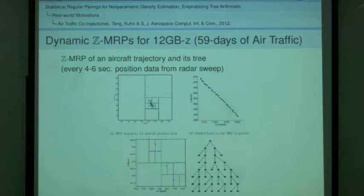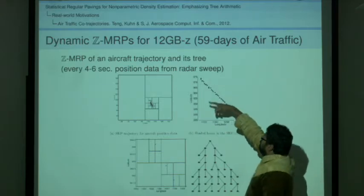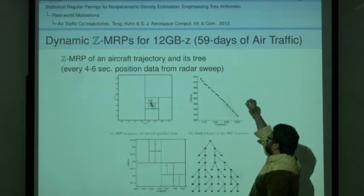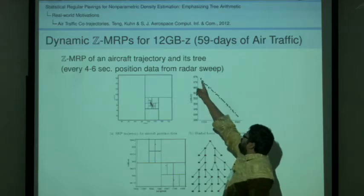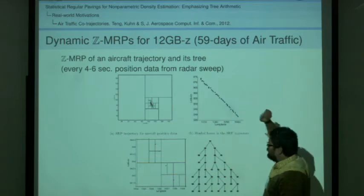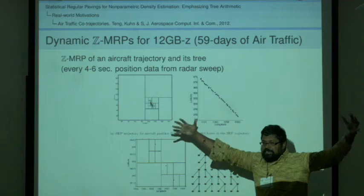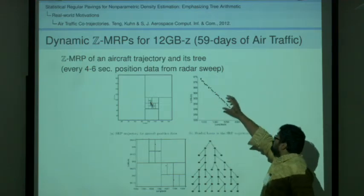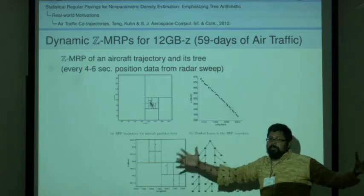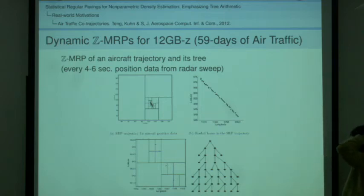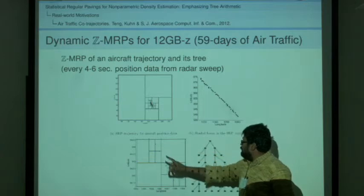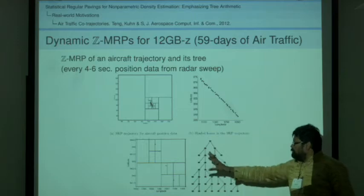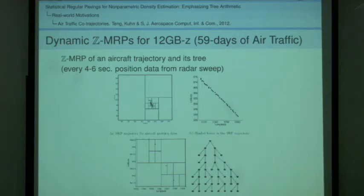Dynamic ZMRPs, so Z is integers. I'll tell you what MRPs are. We want to be very precise about what data is coming from the radar. Every four to six seconds, you have a sweep. Then you have the position data of a particular flight ID. We want to enclose that to account for the flight ID specific sizes of the planes and their fuel capacities. So we want to put some safety zones around it, navigable safety zones. This will be a tree that corresponds to being able to do arithmetic with one trajectory. That will be another tree for another flight ID.